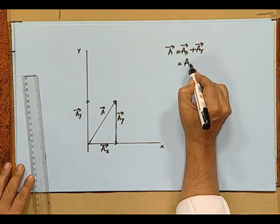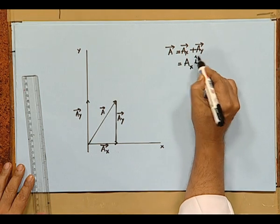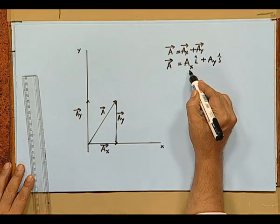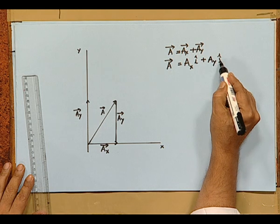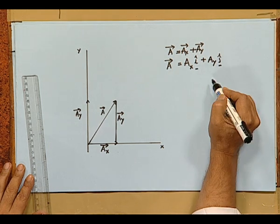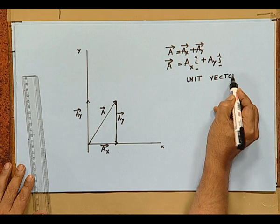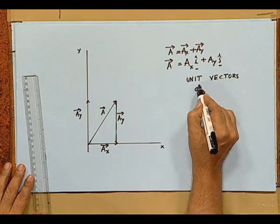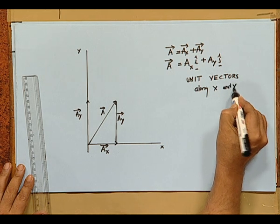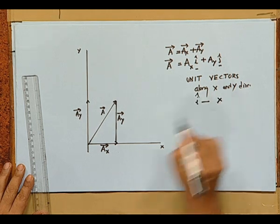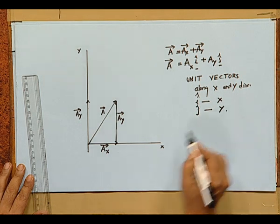These vectors are also written in the form ax i-cap plus ay j-cap. So vector a is equal to ax i-cap plus ay j-cap. What are i-cap and j-cap? They are called unit vectors along the x and y directions. i is the unit vector along the x-direction, j is the unit vector along the y-direction.